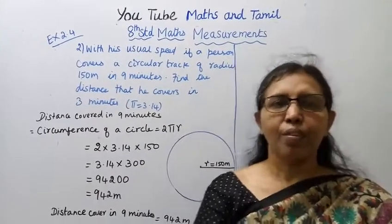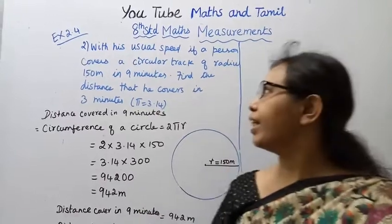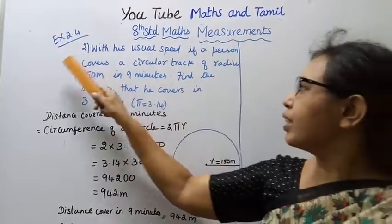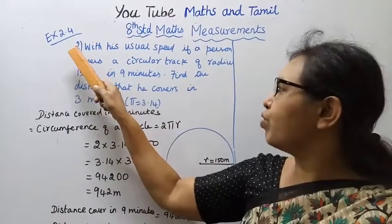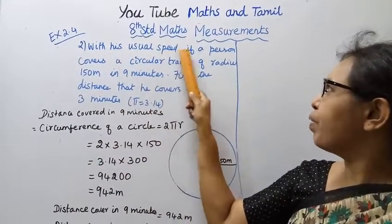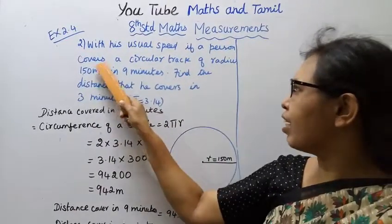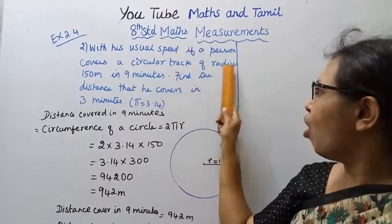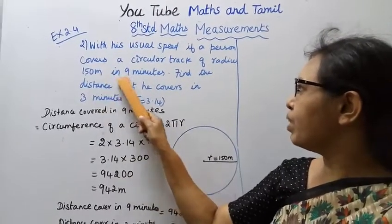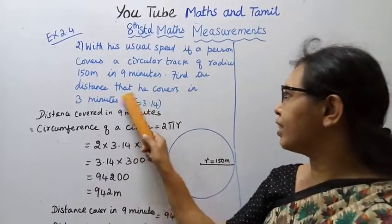Hello students, welcome to Max Tamil channel. 8th standard, Max Term 1 Measurements, Exercise 2.4. If a person covers a circular track of radius 150 meters in 9 minutes, find the distance that he covers in 3 minutes.